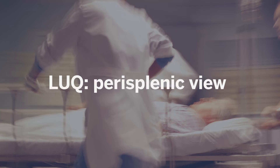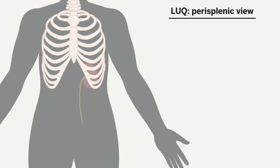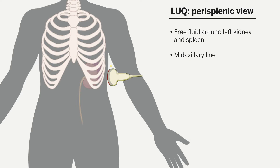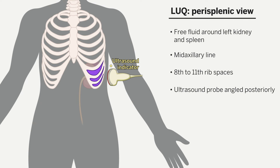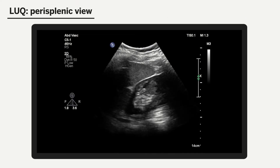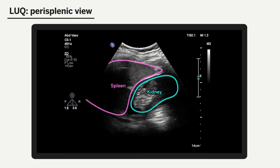Moving on to the left upper quadrant, or perisplenic view, this view is used to assess for free fluid around the left kidney and spleen. To obtain this view, we place the probe in the mid-axillary line on the left side between the 8th to 11th intercostal space, with the indicator again facing towards the 12 o'clock position or the patient's head. As anatomically the spleen is a very posterior structure, the probe will also need to be in a very posterior position in order to obtain this view. Sliding between intercostal spaces may be required to optimize this view.